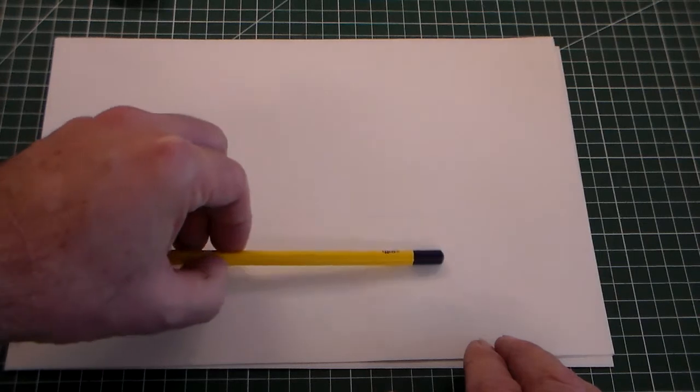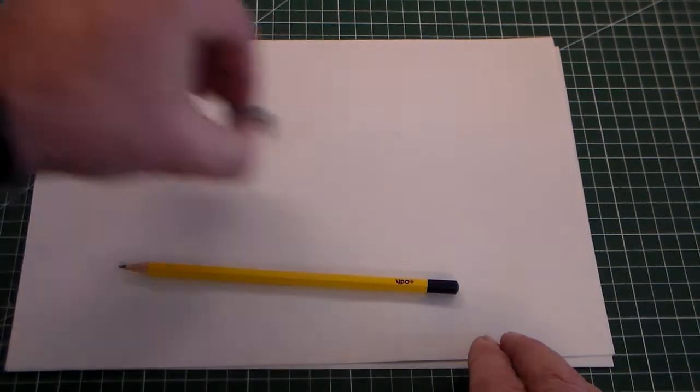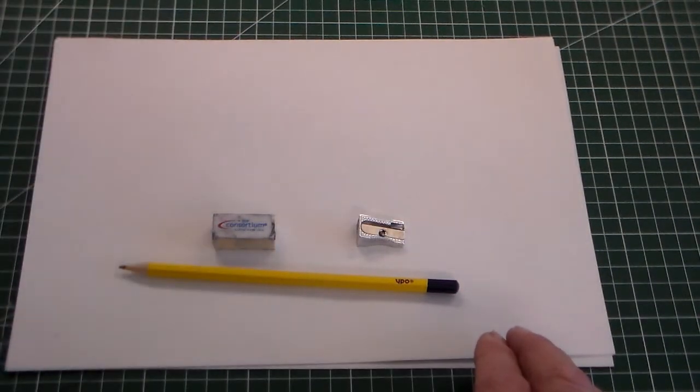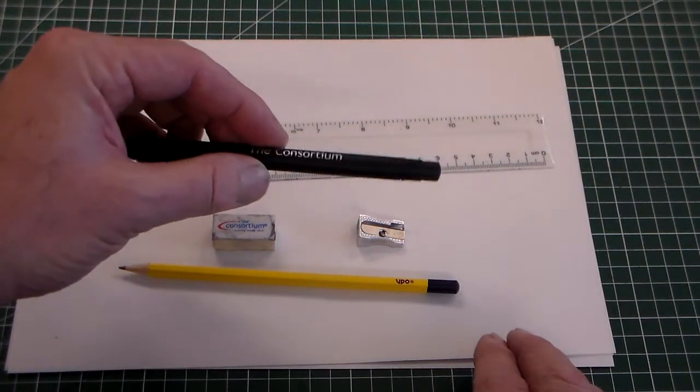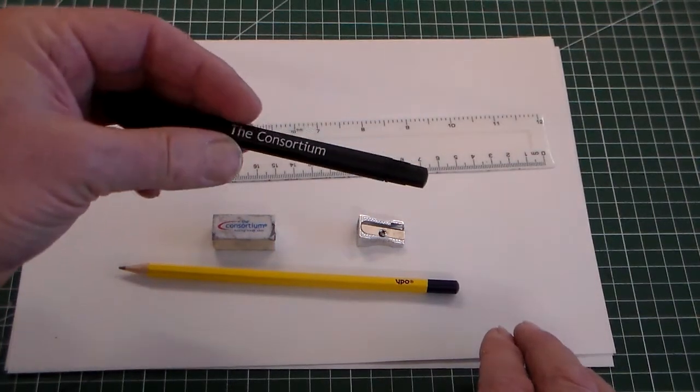For this lesson you will need a piece of A4 paper. This is cartridge paper but you can use just normal printer paper. You will need a pencil, a pencil sharpener and a rubber, a ruler and you might like to use a fine liner as well.